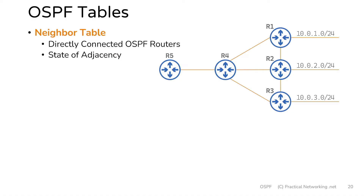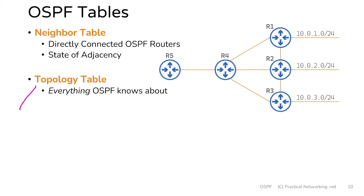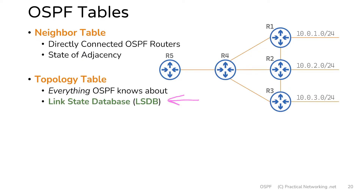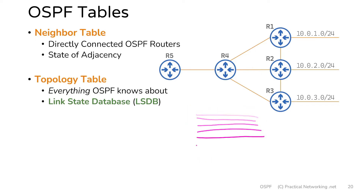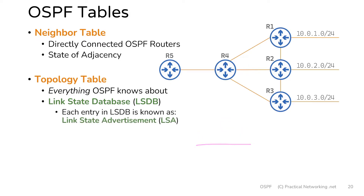That brings us to the next table: the topology table. Inside the topology table is everything that OSPF knows about. The concept of a topology table is not specific to OSPF — pretty much every routing protocol has some sort of topology table to store everything it knows about. In OSPF terms, that topology table is referred to as the link state database, or the LSDB. Within the LSDB are a bunch of individual entries, and OSPF calls each of those individual entries a link state advertisement, or an LSA.